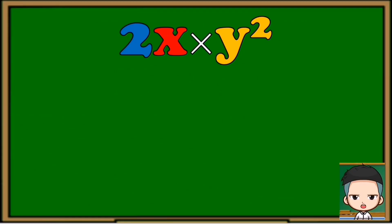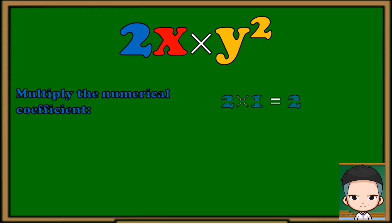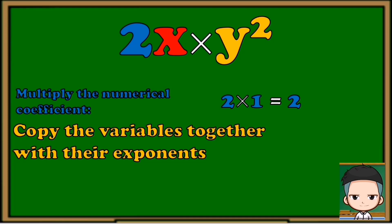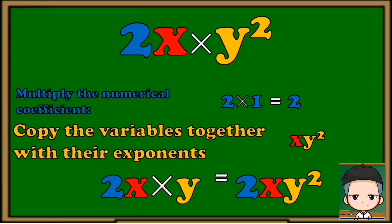Now we're going to multiply polynomials with different variables. First step: multiply their numerical coefficients. The numerical coefficient of 2x is 2 and the numerical coefficient of y squared is 1. Then copy the variables with their respective exponents and put them together. Lastly, arrange your answer — numerical coefficient first, then the variables together in alphabetical order. Our final answer is 2xy squared.